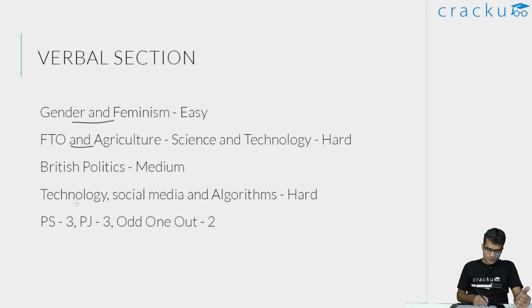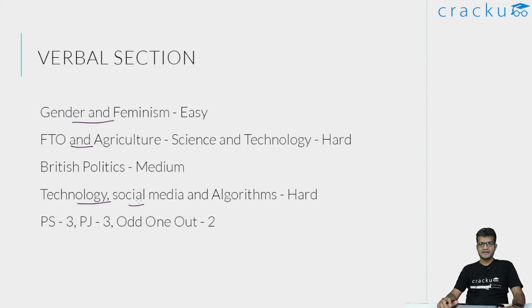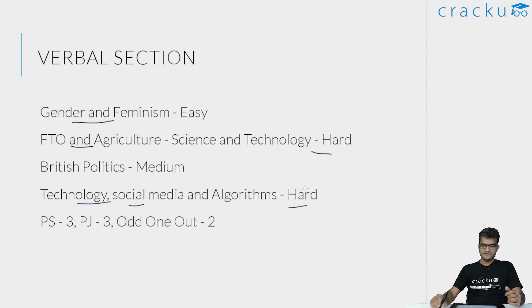There were two RCs involving science and technology. One involved biology — basically DNA and RNA — and the other involved social media and algorithms. Both I found to be fairly on the difficult side. Normally I have some interest in science and technology and read the latest articles, but both RCs here were demanding and even the questions were not very easy. So there were two RCs which were definitely on the difficult side.